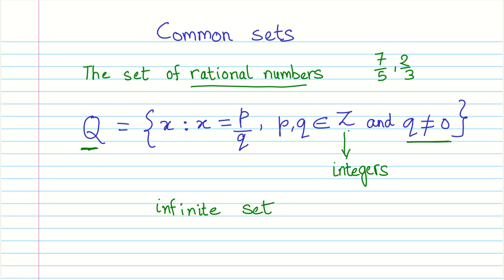Where P and Q belong to Z—the set of integers—and Q must not be equal to zero. This ensures we are defining a rational number properly. Q is the set of rational numbers, and it is an infinite set with infinite rational numbers.